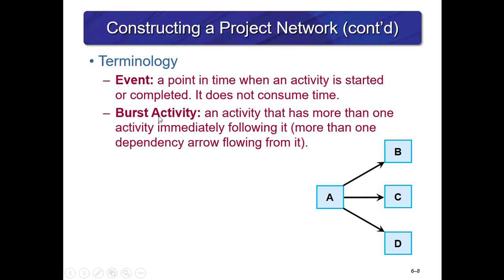More terminology: an event is a point in time when an activity is started or completed; it does not consume any time and can also be known as a milestone. A burst activity is an activity that has more than one activity immediately following it. In this diagram, A has more than one dependency arrow flowing from it — B, C, and D are dependent on A — so A is a burst activity.